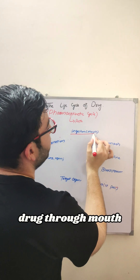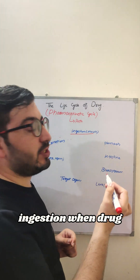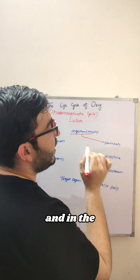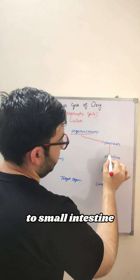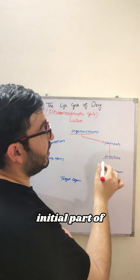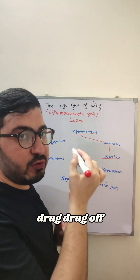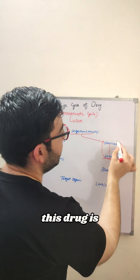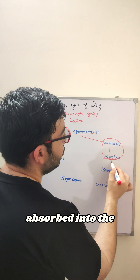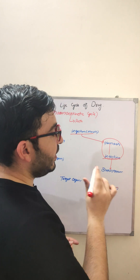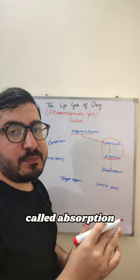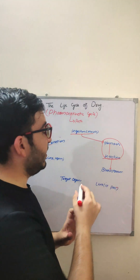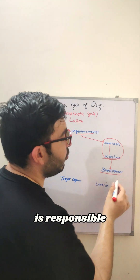Number one: we take a drug through the mouth — this is called ingestion. When we take a drug, it goes to the stomach, and from the stomach it goes to the small intestine. From the small intestine, the drug is absorbed into the bloodstream in a process called absorption.